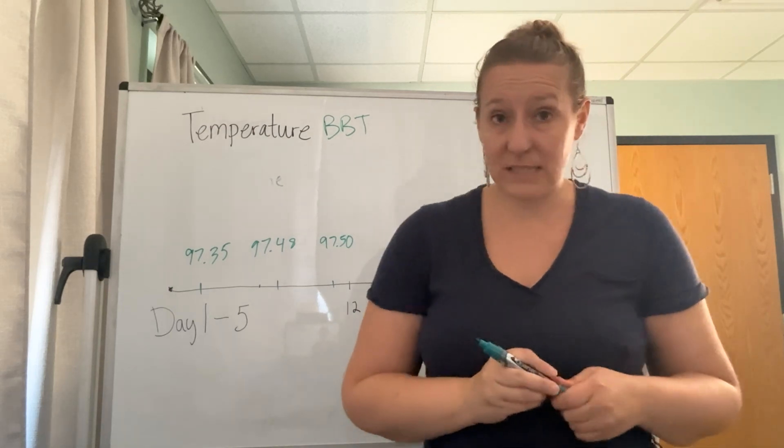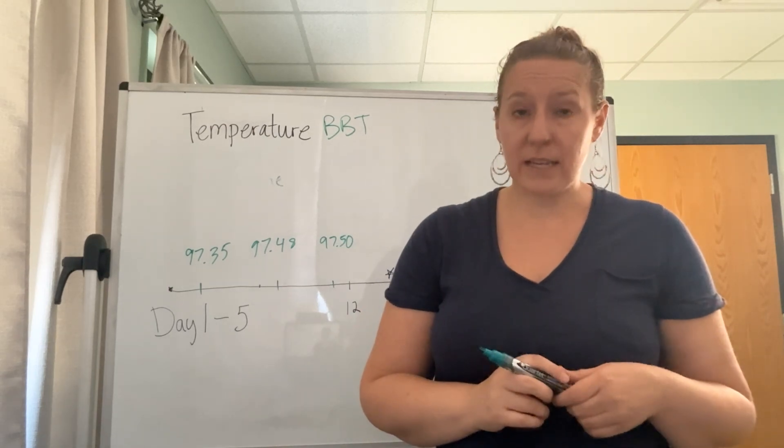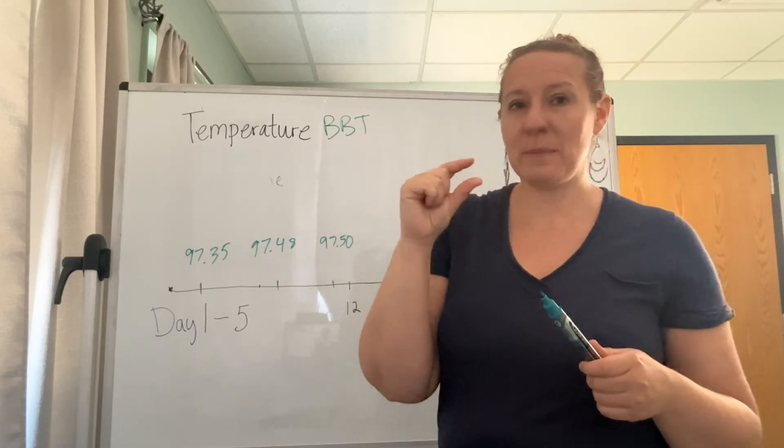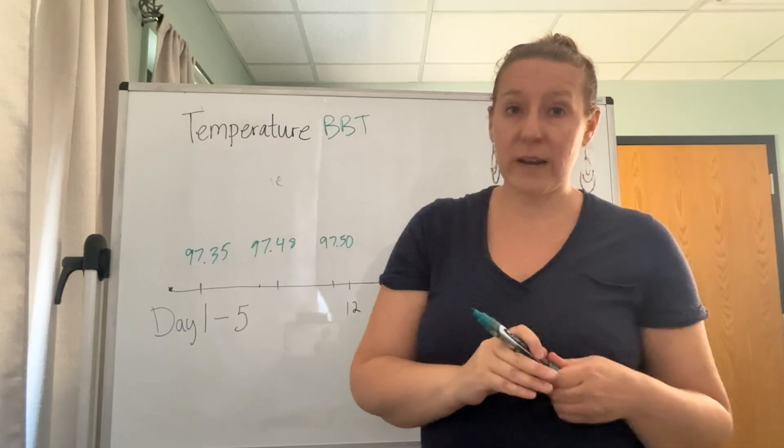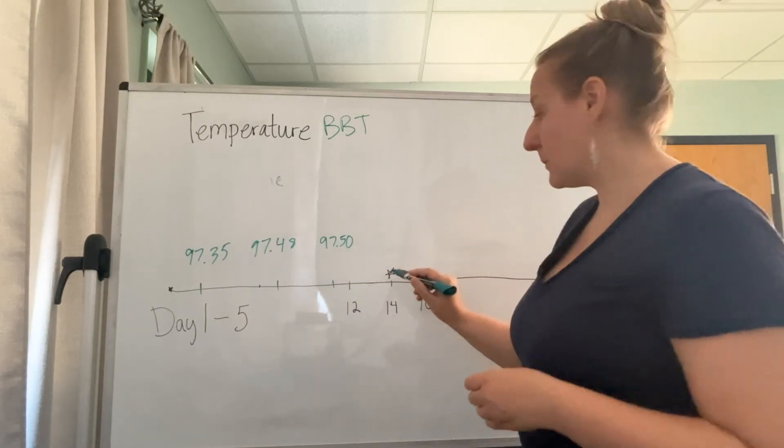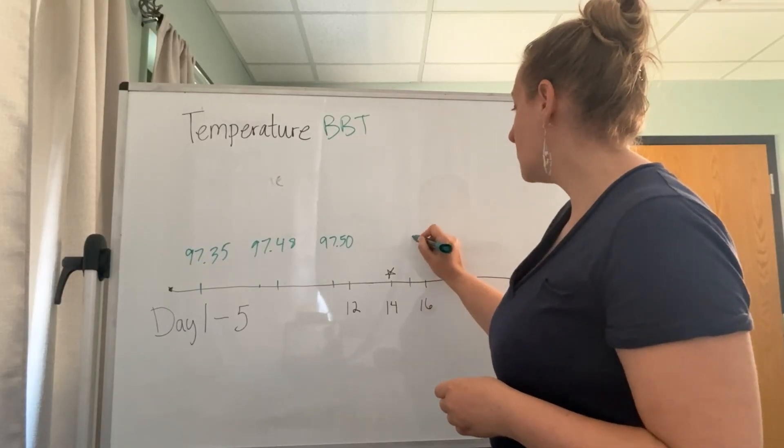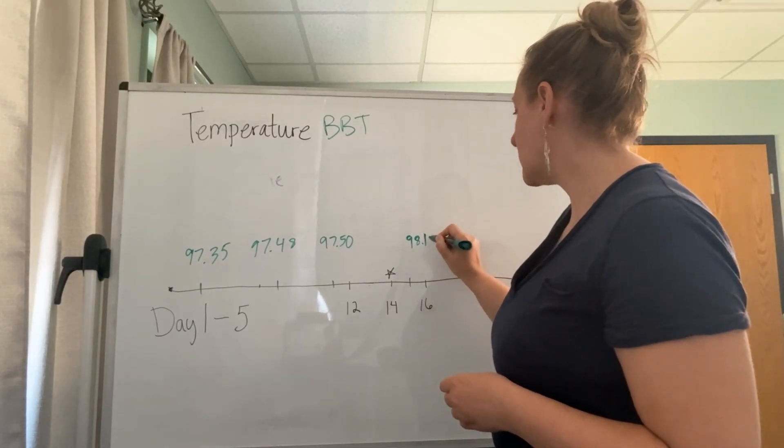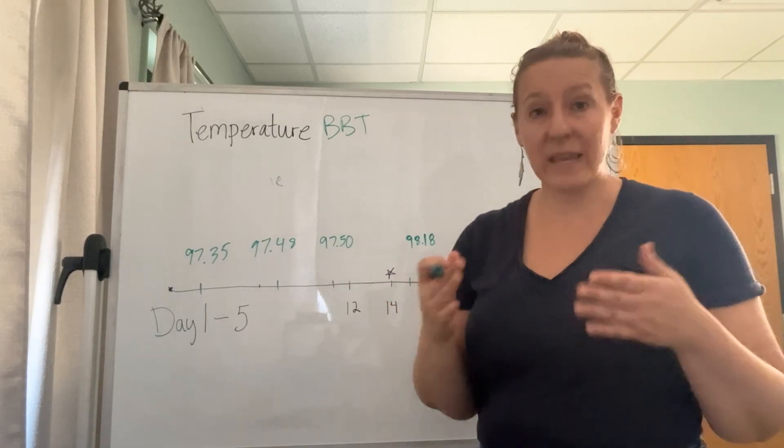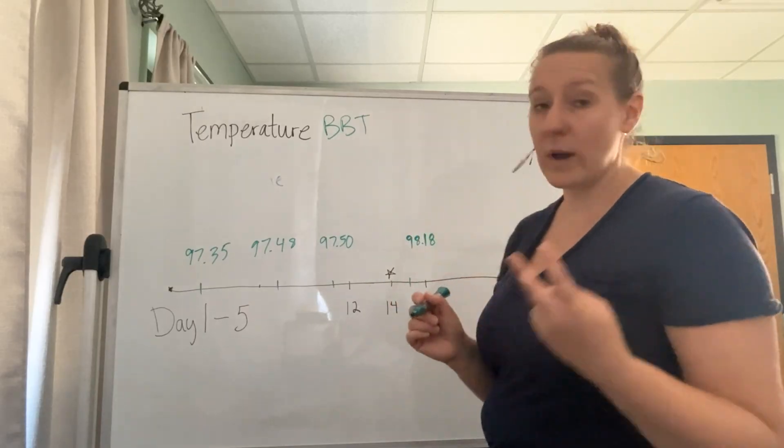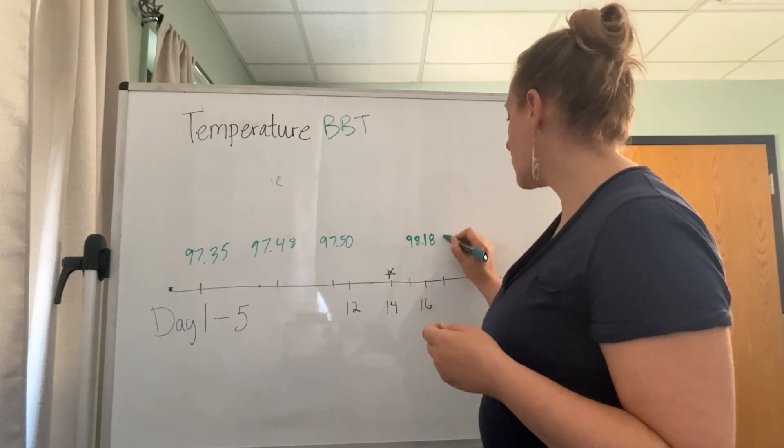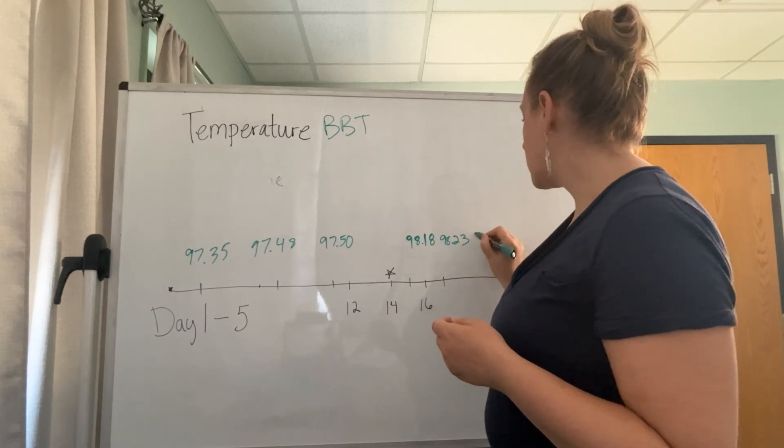After you ovulate, your basal body temperature jumps a bit. It's a small amount, which is why we use these accurate thermometers. If you're taking your temperature regularly at the same time every morning, you will notice. Let's say ovulation was day 14—starting on day 15, maybe it's now like 98.18. That doesn't seem like a huge jump, but when you're paying close attention you'll notice. You'll want to make sure this wasn't an anomaly, so check that day 16 and 17 are also right around the same.